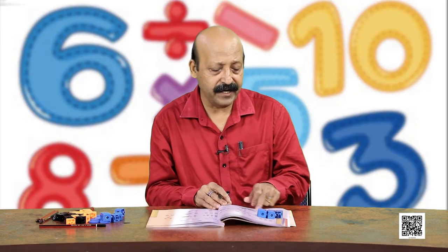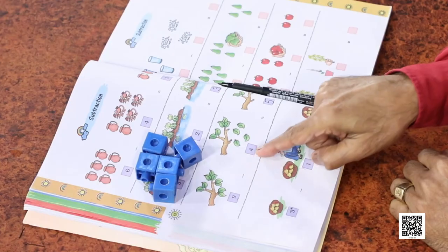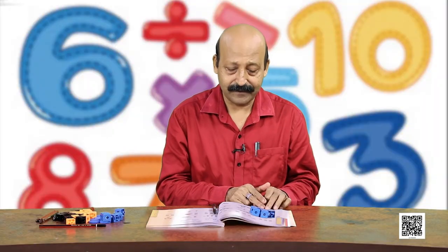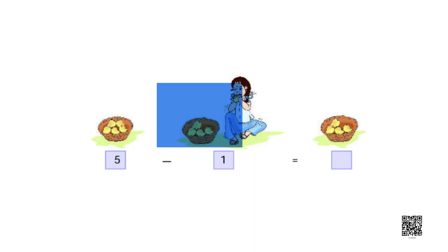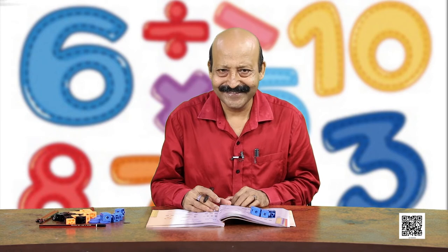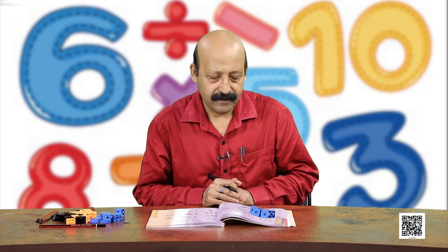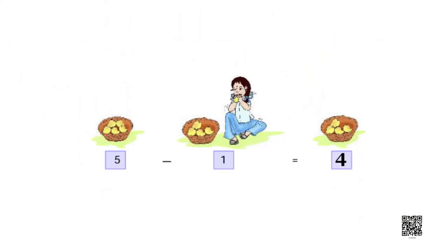So you have many ways of finding out this: number 1 is by using objects, second way is by using your fingers, third way is by counting pictures given, and fourth way is writing the numbers. Now let us do it: 5 minus 1. There are 5 mangoes and 1 has been eaten. 5 minus 1 - how many mangoes are left? 1, 2, 3, 4. So we can write: 5 minus 1 is equal to 4.